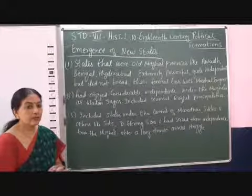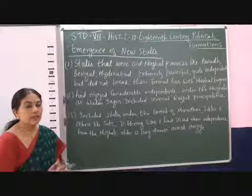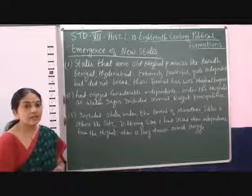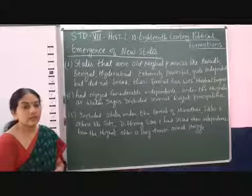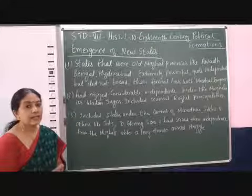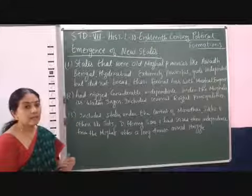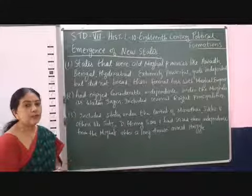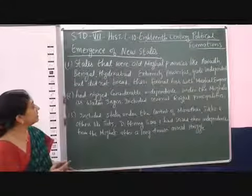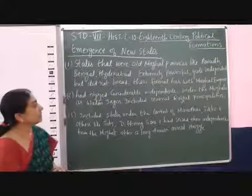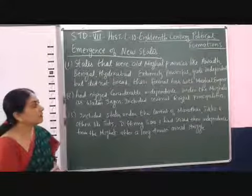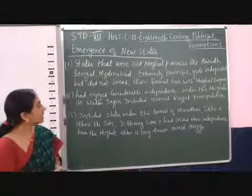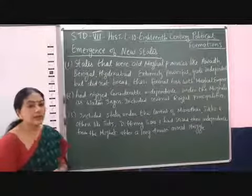So in this way, the new states which emerged were divided into three groups. Now we will study all three groups in detail, starting with the old Mughal provinces like Awadh, Berar, and Hyderabad.